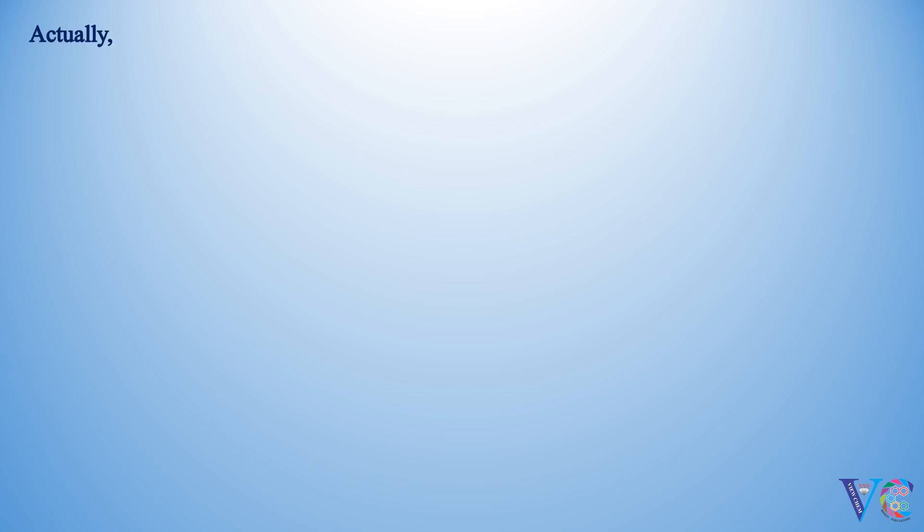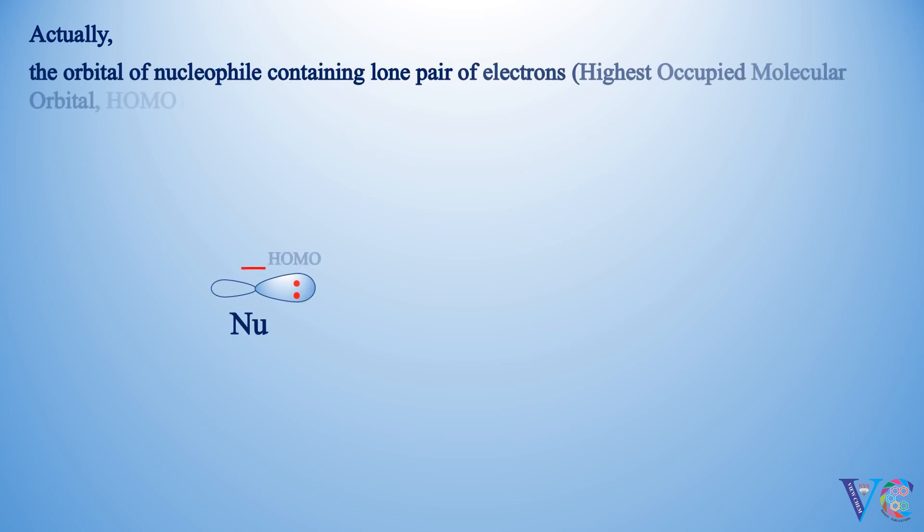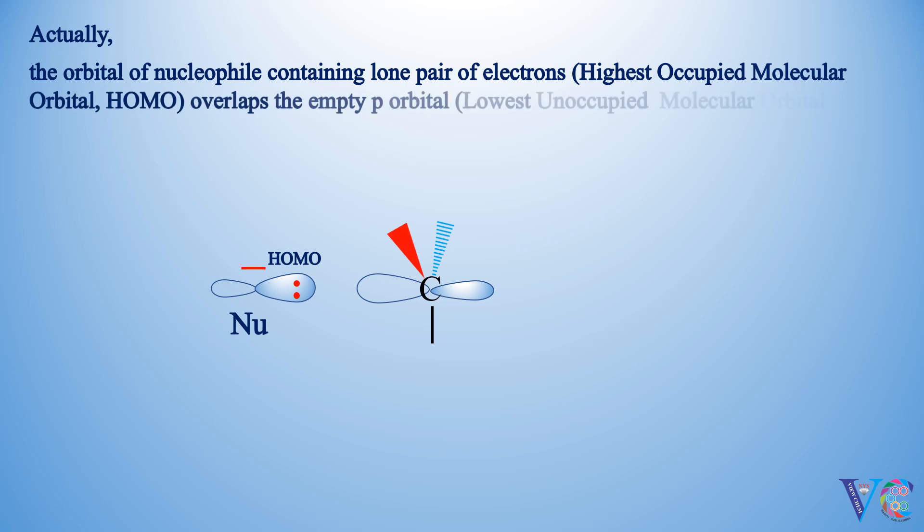Actually, the orbital of nucleophile containing lone pair of electrons (highest occupied molecular orbital, HOMO) overlaps the empty p orbital (lowest unoccupied molecular orbital, LUMO) of sp2 carbon.